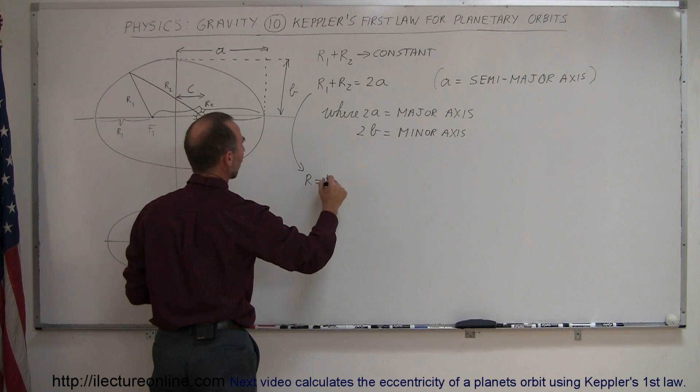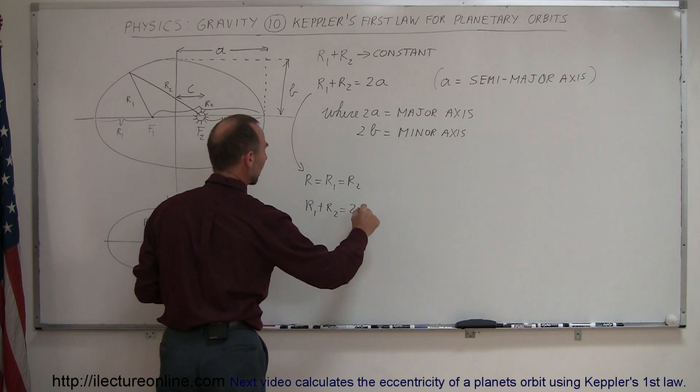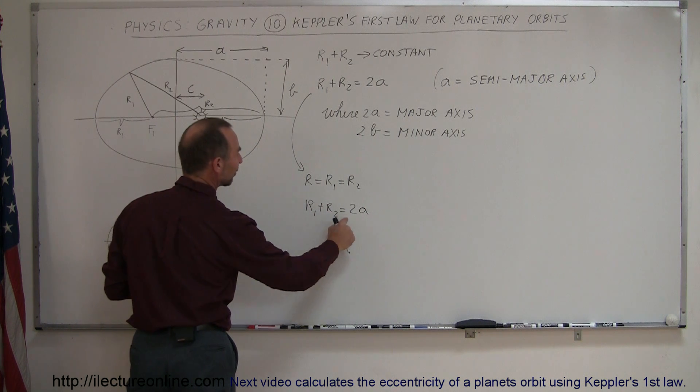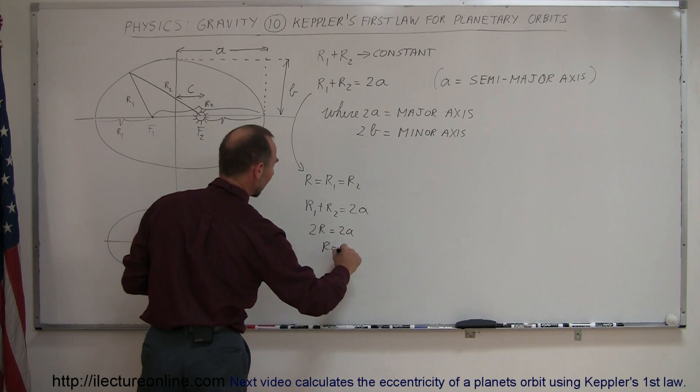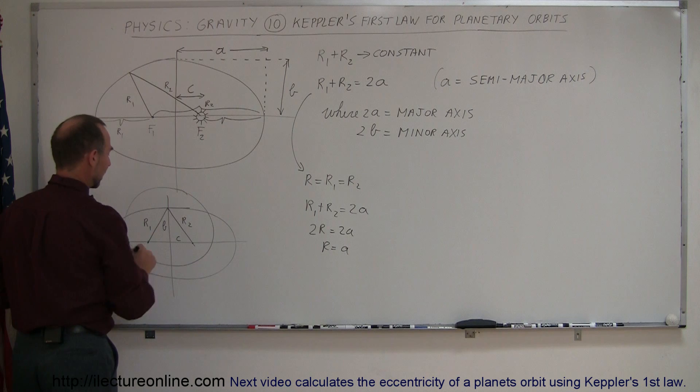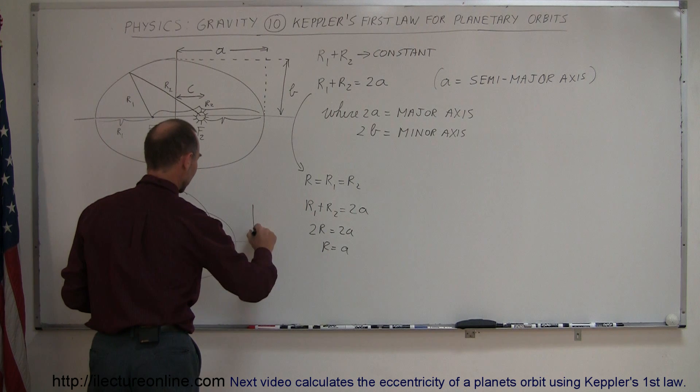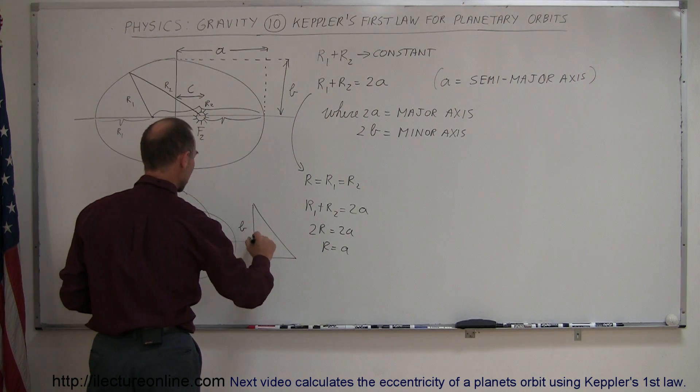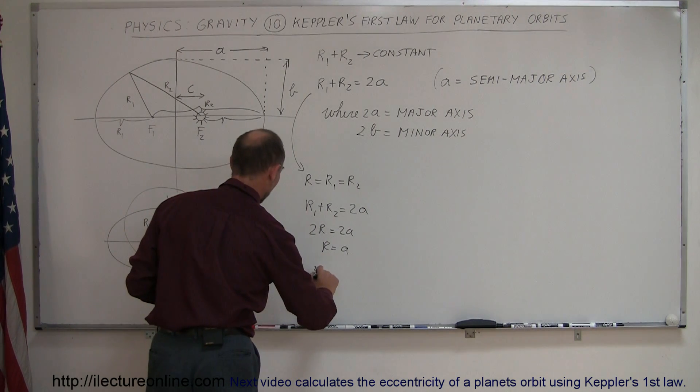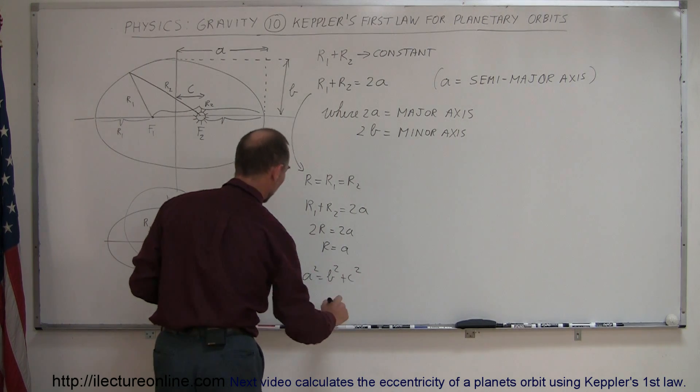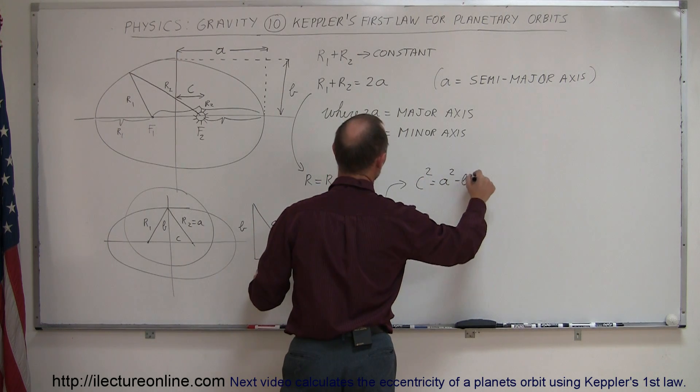So, in this particular case, we can see that R, let's not call it R, is equal to R1, which is equal to R2, which, since R1 plus R2 is equal to 2A, and since R is equal to either one of them, we can say that 2R equals 2A, or R is equal to A. So, when I have it drawn like this, I notice that the hypotenuse of this triangle is equal to A, so I end up with a triangle that looks like this. So, this would be B, this would be C, this would be A, and then we can see, using Pythagorean theorem, that A squared is equal to B squared plus C squared, or, if I solve this for C, I can say that C squared is equal to A squared minus B squared.